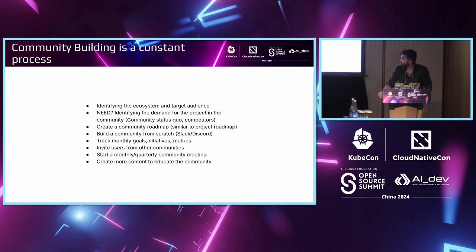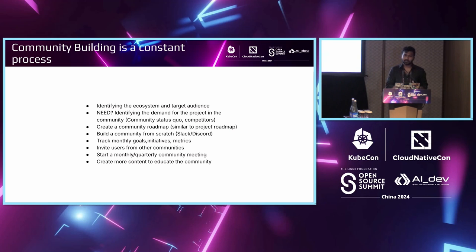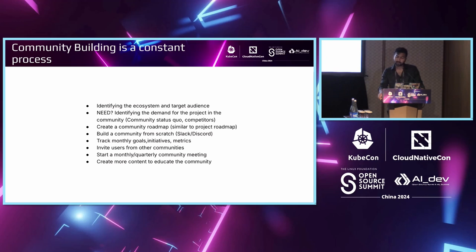Let's see how the process of building a community works. The first step is to identify the ecosystem and your target audience — who exactly is the interest group, who does the community cater to — and then identify the need through the community. You talk to people who are part of the ecosystem; if you want to launch a project in the cloud native space, you need to talk to your stakeholders. You also need to identify competition: who are the competitors, how are they functioning, what's their community like, and how you can make yours better.